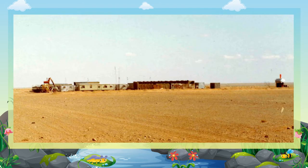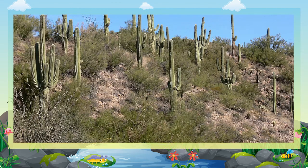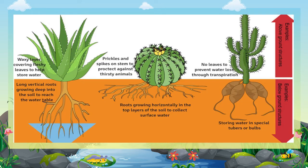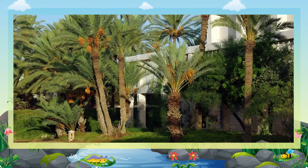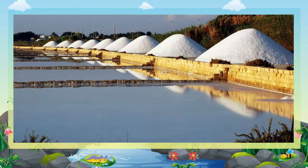Vegetation: As the area is very dry and hot, only a few plants grow in this desert. Mostly cacti, grasses, and thorny bushes are found here. Shrubs and cacti survive because they require very little water. Most of these plants have long roots which go deep inside the ground to absorb water. The date palm trees are the only trees which grow in this region.